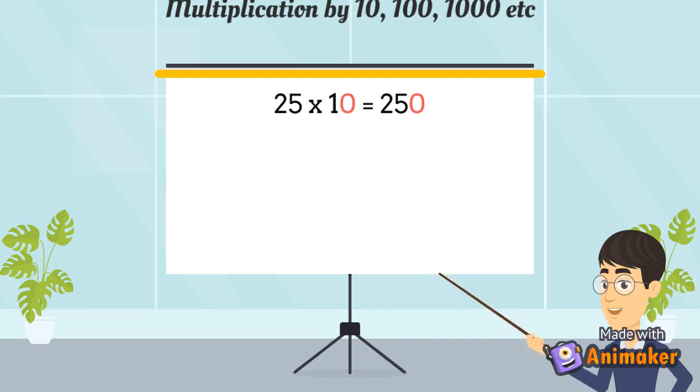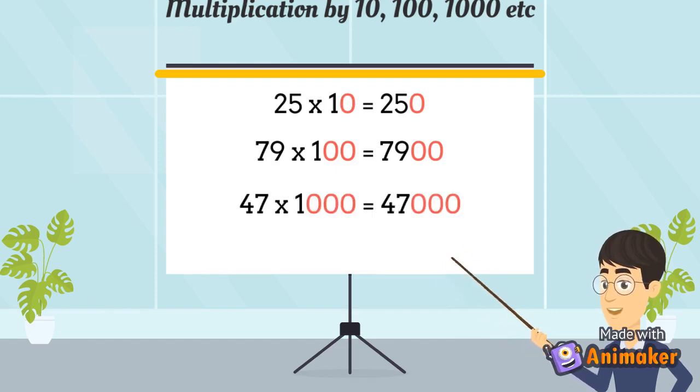If you multiply a number by hundred, insert two zeros on the right of the number, like seventy-nine into one hundred is equal to seven nine zero zero. And if you have to multiply a number by thousand, simple, insert three zeros on the right of the given number. So, forty-seven into one thousand is equal to forty-seven thousand. Simple, isn't it?